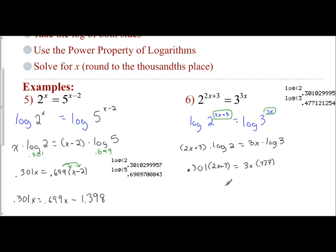And so now I'm going to solve. I'm going to distribute this 0.301 to both terms. That's going to be 0.602x plus 0.903. And I'm going to take the 3 and distribute it to the 0.477, and that's 1.431. So I have 1.431x.